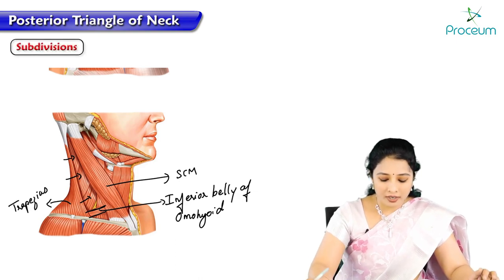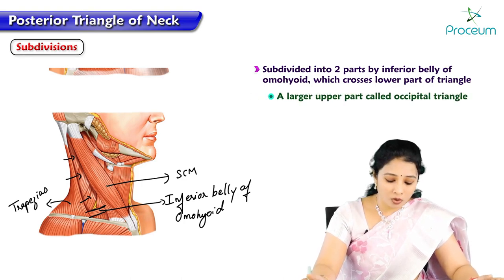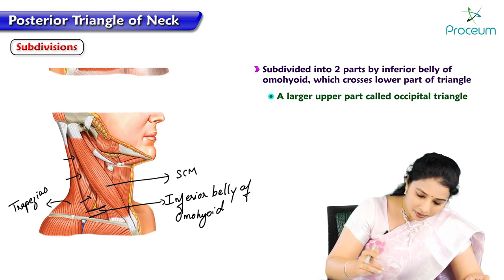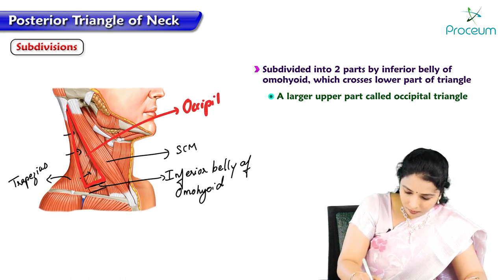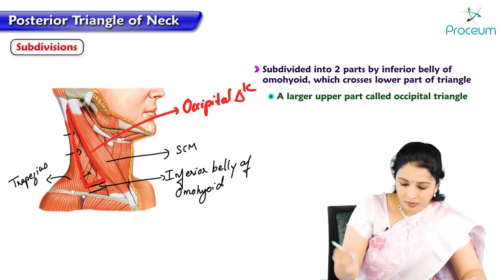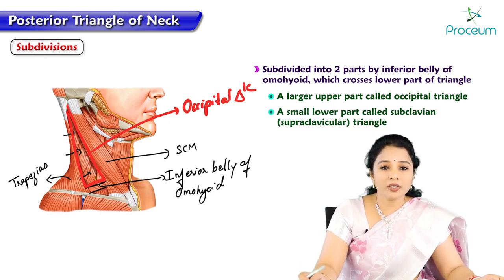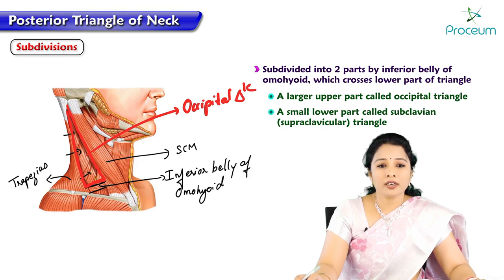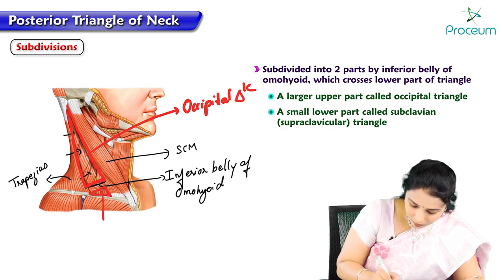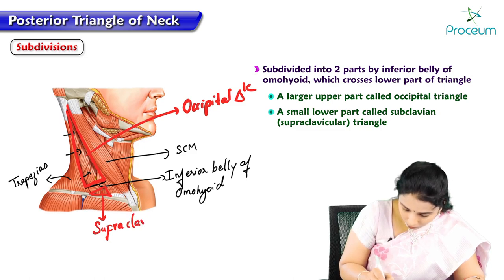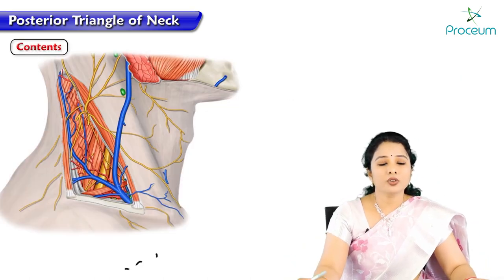The inferior belly of omohyoid divides the posterior triangle into a large upper part called the occipital triangle, and a small lower part below the inferior belly called the supraclavicular triangle, or subclavian triangle.